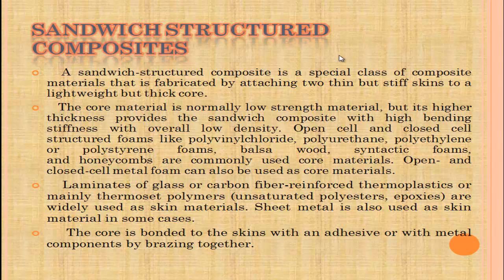Sandwich structure composites: a sandwich structure composite is a special class of composite material fabricated by attaching two thin but stiff skins to a lightweight but thick core. The core material is normally low strength, but its higher thickness provides the sandwich composite with high bending stiffness at overall low density. Open cell and closed cell foam forms like polyethylene, polychlorine, and styrene foams, balsa wood, synthetic foams, and honeycombs are commonly used core materials.